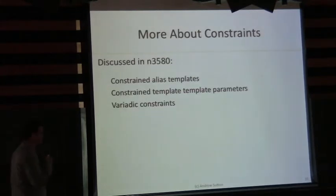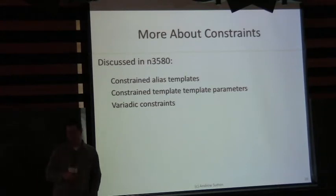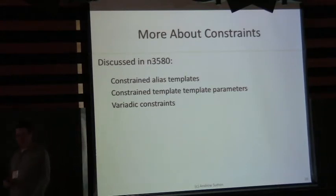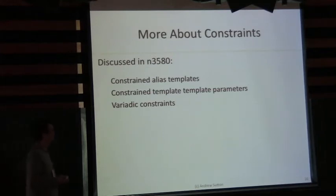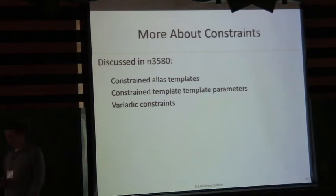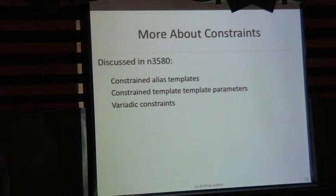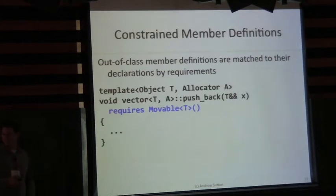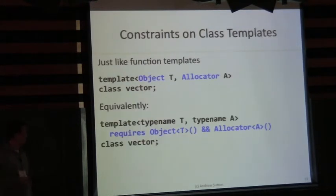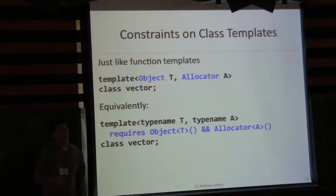There are other things that show up in the N3580 document. In particular you can constrain alias templates, you can constrain template template parameters, and we can write variadic constraints. There are a lot of different things we can do because we're really just talking about constexpr functions being applied almost as if they were enable_if — but this set of features is significantly more advanced than that.